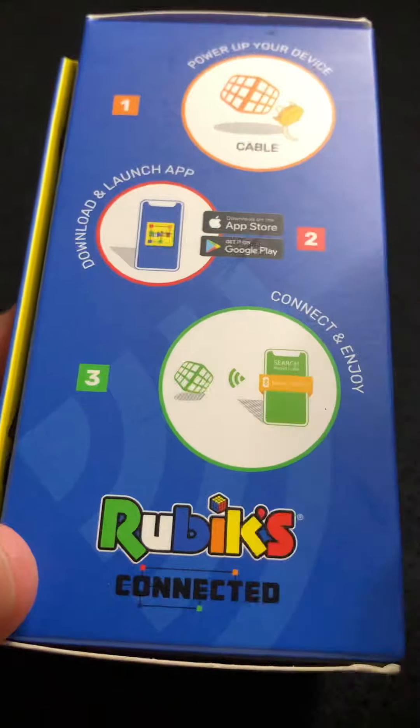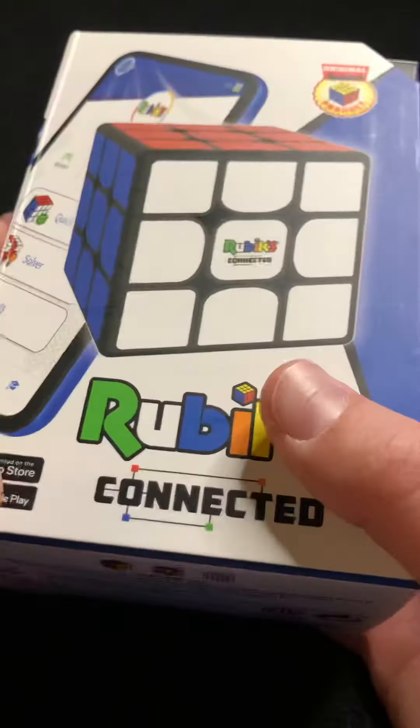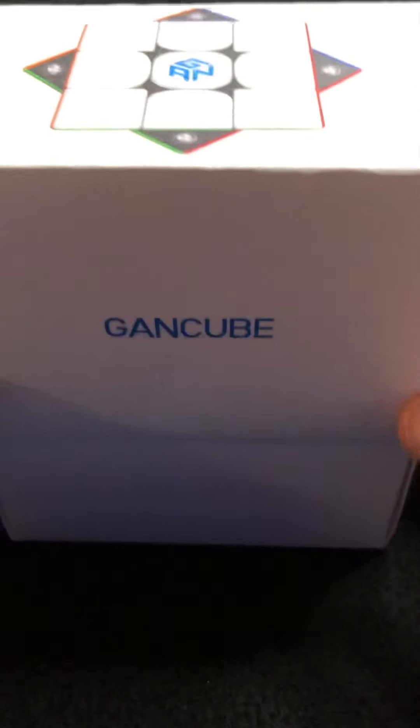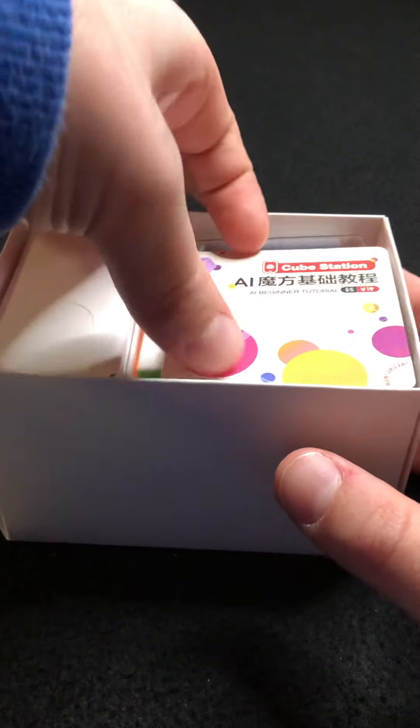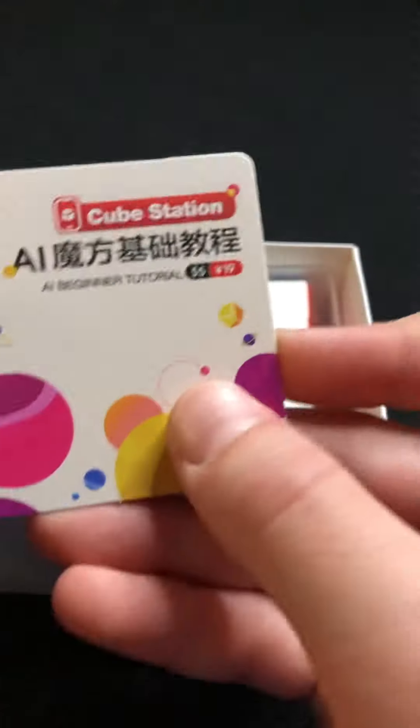You can charge it up and connect it to the Rubik's Cube app. There's a cable to charge it up and connect it, and you can play with it. It's really cool, but we're going to get straight into this video with the Gan 356. We have this card, Cube Station beginner tutorial for five dollars. I already know how to solve the cube, so just toss that aside.